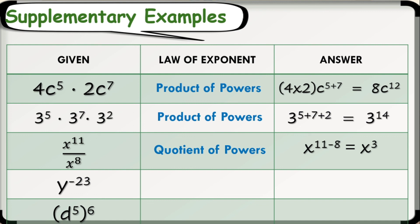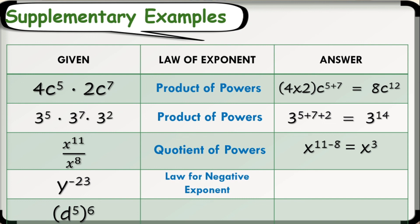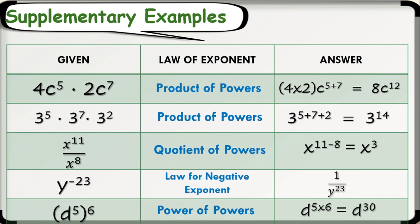Next: y raised to negative 23. We apply the law for negative exponent, and that gives us 1 over y raised to positive 23. Lastly, we have the quantity of d raised to 5 raised to the power of 6. The applicable law of exponent here is power of powers. By applying that law, we have d raised to the product of 5 and 6, which gives us d raised to 30.